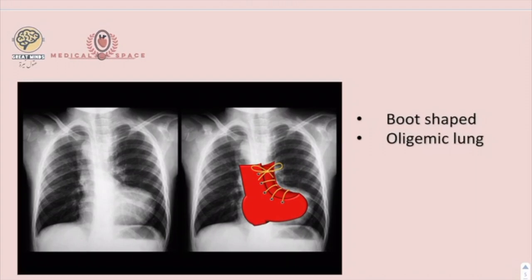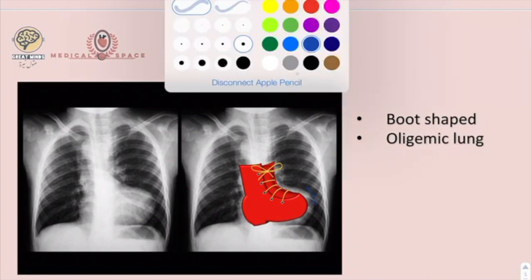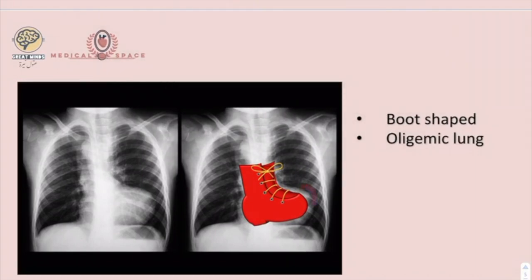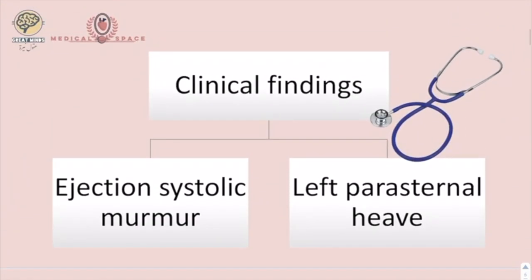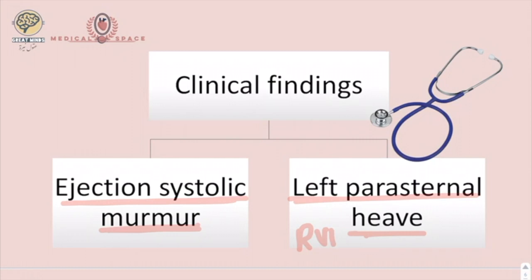On chest X-ray of a patient with Tetralogy of Fallot, you will notice the characteristic boot shape, which is due to right ventricular hypertrophy, and you will also see an oligemic lung, meaning blood flow to the lung is diminished. The clinical findings are ejection systolic murmur and a left parasternal heave, which indicates right ventricular hypertrophy, and the ejection systolic murmur is due to the outflow obstruction of the right ventricle.